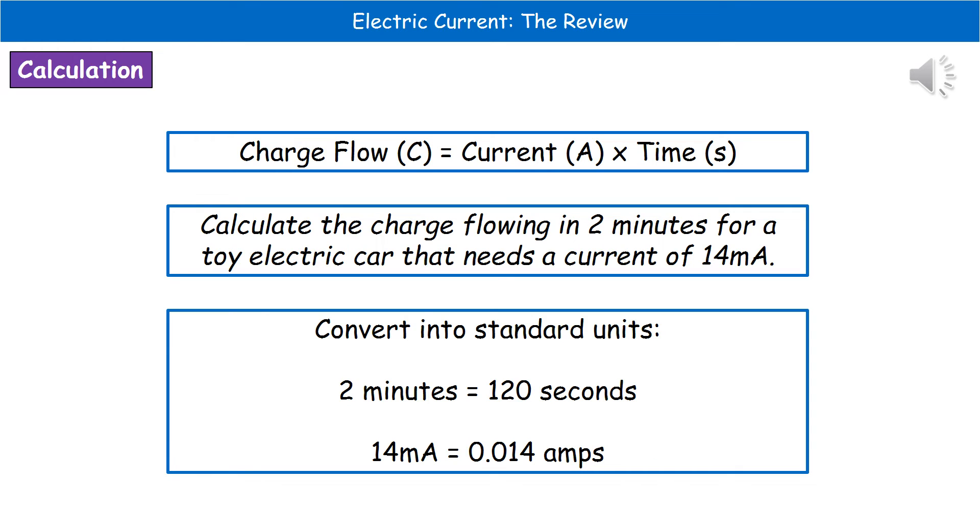We can't use minutes or milliamps in our calculation, otherwise we're going to get the wrong answer on the exam paper. So the first thing to do is convert our minutes into seconds. So two minutes hopefully we know is 120 seconds with 60 seconds per minute, and then we convert our milliamps into amps. So 14 divided by a thousand gives us 0.014 amps.